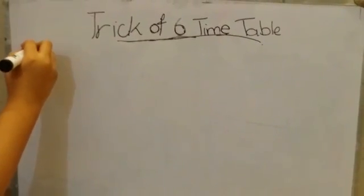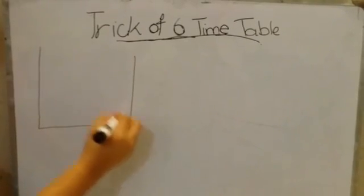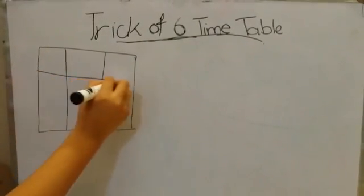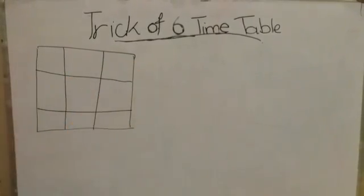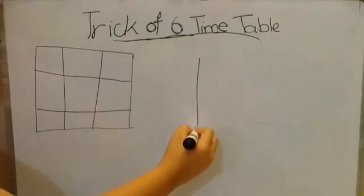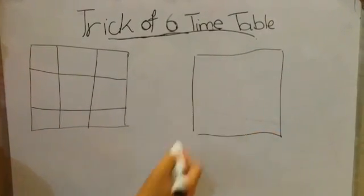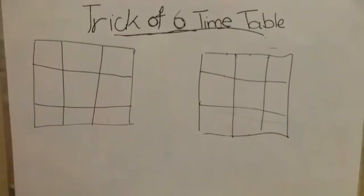Now let's start our trick of six timetables. The first step that we need to do is we're going to make two grids like this. We're going to make three columns and three rows, and same on the other side.